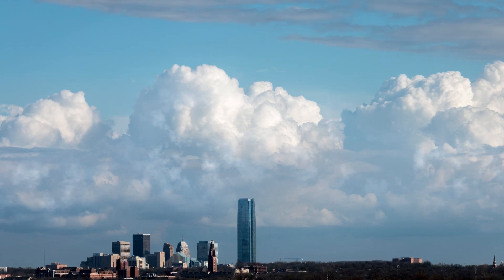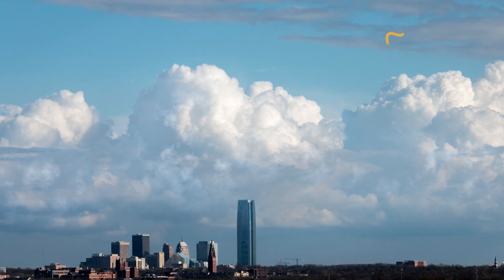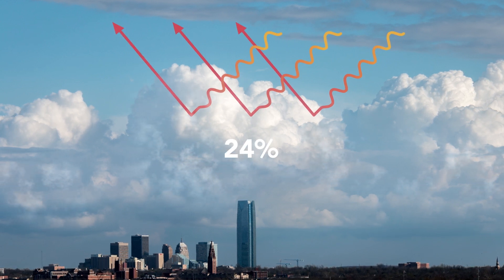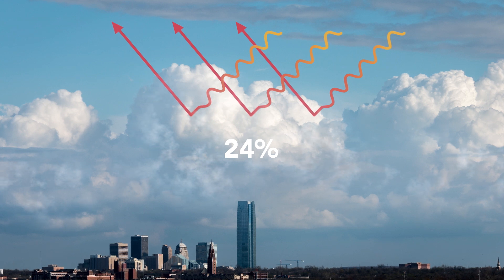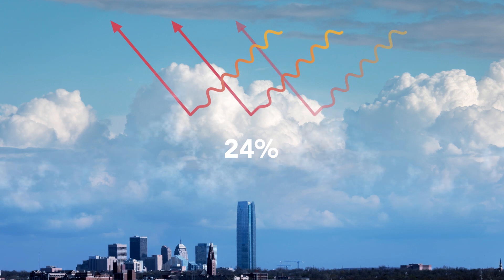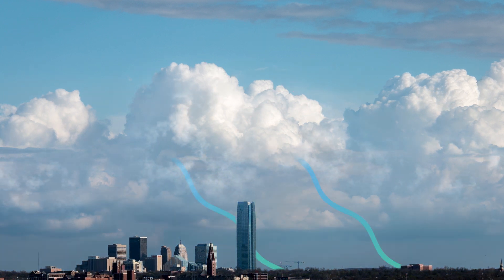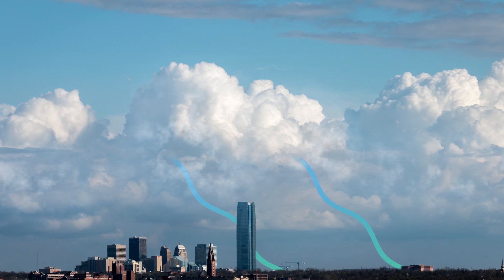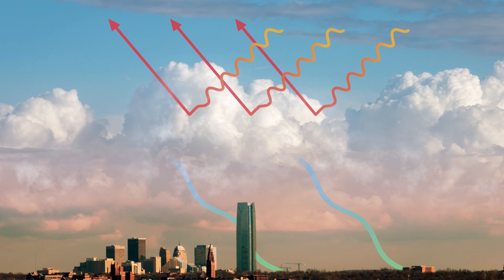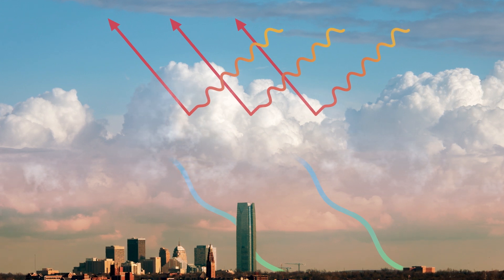There are many other processes that can impact the energy budget of the Earth. One example is clouds. Clouds can impact the amount of incoming solar radiation that reaches the Earth's surface. Globally, clouds reflect about 24% of incoming radiation, reducing the amount of radiation that the surface receives and cooling the Earth. However, clouds — especially high clouds — also absorb long-wave radiation emitted by the Earth, and this acts to warm the Earth. Understanding this balance between the cooling and warming effects of clouds is very important for future climate change.